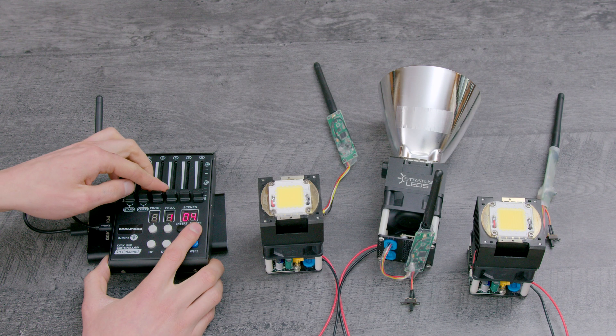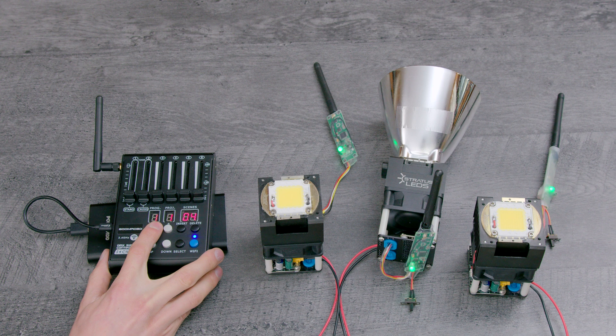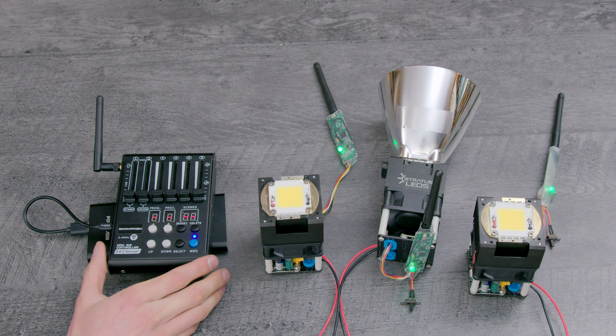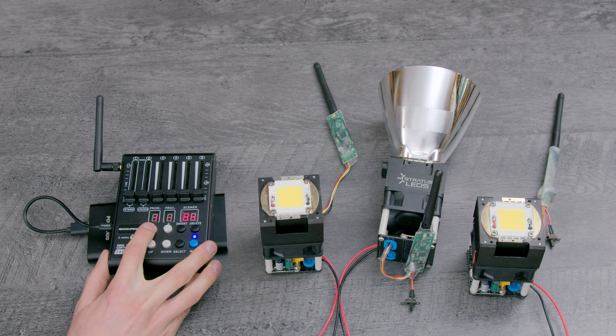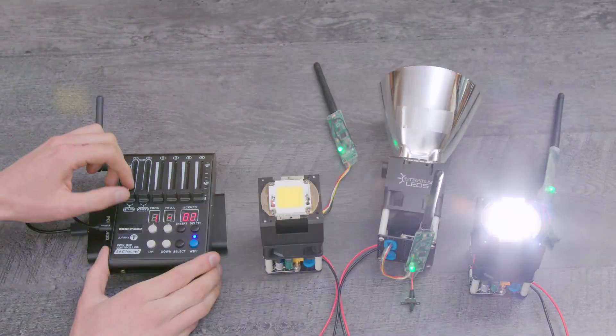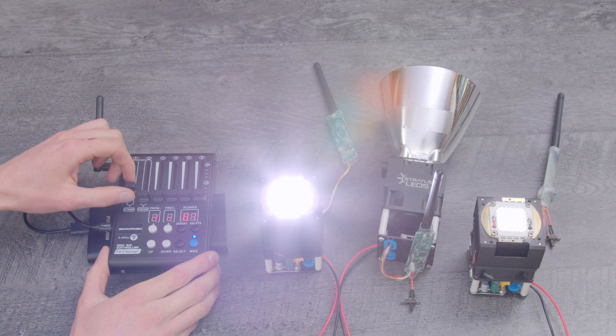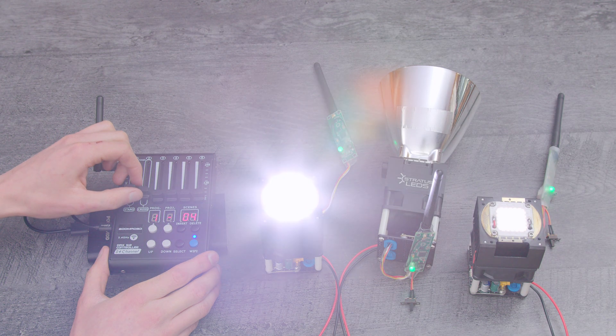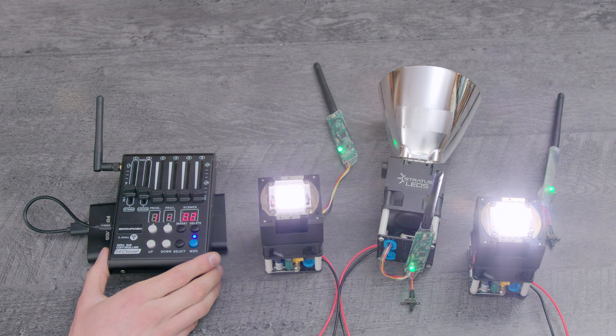Once you have your desired number of scenes set, press button A for 3 seconds to exit programming mode. Select Program 1 by pressing button A. The console will then cycle through the scenes, and the speed and fade can be adjusted by the first two sliders.